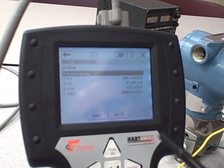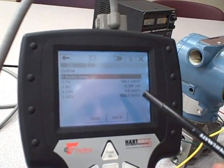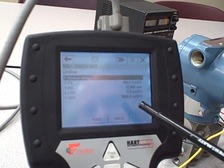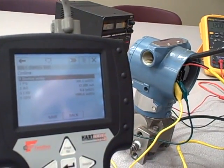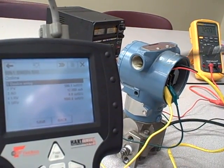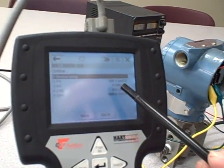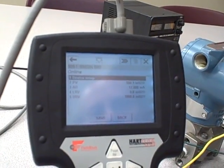What we're looking at here is the screen of an Emerson Model 375 HART communicator as it's communicating with a Rosemount Model 3051 differential pressure transmitter. To this transmitter we have applied about 500 inches of water column air pressure to the high side.